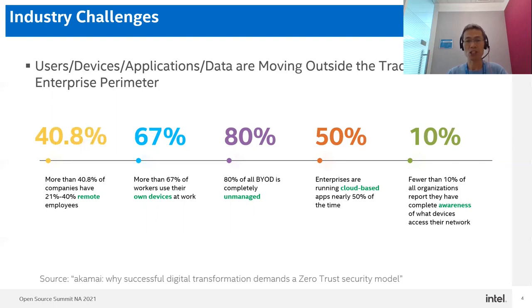More than 60% of workers use their own devices when working at home. More than 80% of companies' devices are not managed by the enterprise IT administrators. More than 50% of company application services are running on the cloud right now. But 10% of organizations have reported they have no awareness of what devices are accessing their network. This proposes many challenges to enterprise and industrial networks, so we need to propose gateways and solutions to address these problems.